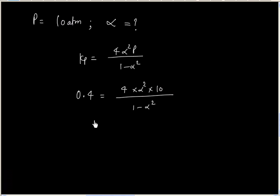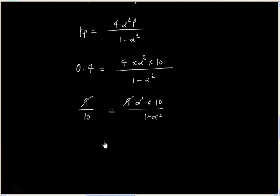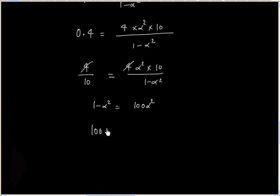From here we can solve for alpha. This is 4 divided by 10. Simplifying, we get 100 alpha squared equals 1.